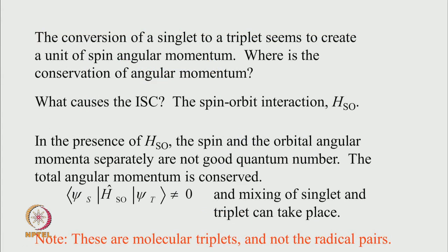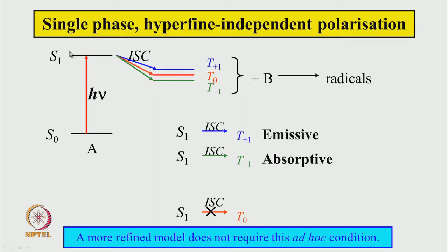With this approximation, we get two types of spectrum — either totally emissive or totally absorptive — arising from selective ISC to T+1 or T−1. The conversion of a singlet to a triplet seems to create one unit of spin angular momentum. But we have been discussing conservation of angular momentum — when S1 goes to T+1, S1 has no spin angular momentum but T+1 has one unit of spin angular momentum. How is this created? What happened to the conservation of angular momentum rule?